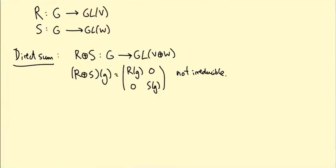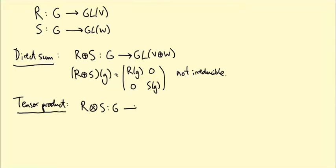There's another operation, written with a times sign with a circle around it, called the tensor product. We can construct a representation r ⊗ s, and the vector space on which this representation lives is V ⊗ W.